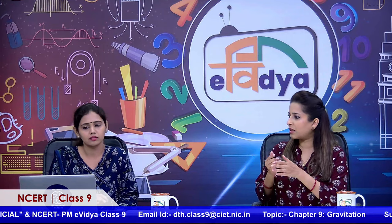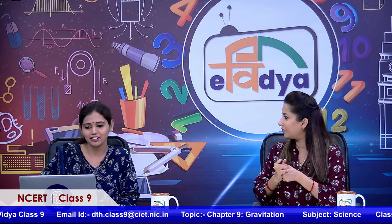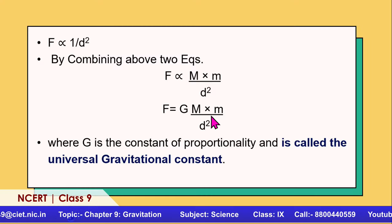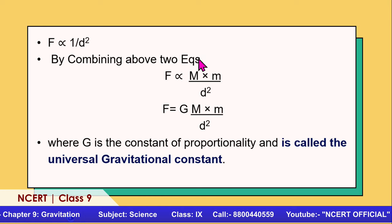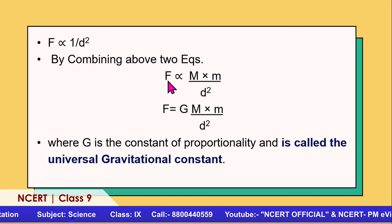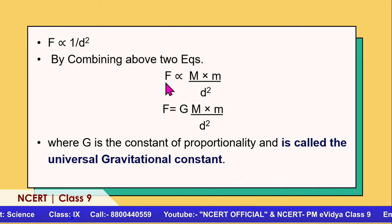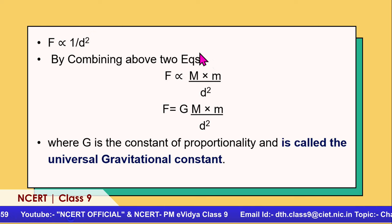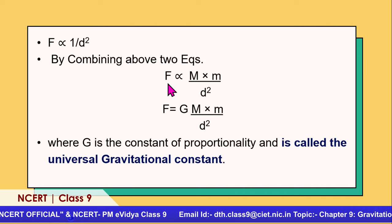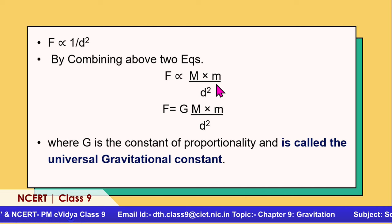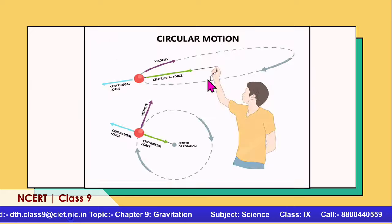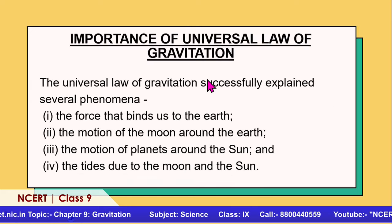If the mass of one body is doubled, does the gravitational force also double? Looking at F = GMm/d²: since F is directly proportional to the masses, if one mass is doubled, the force also becomes double. And if the distance becomes double, the force becomes one-fourth — because force is inversely proportional to d².